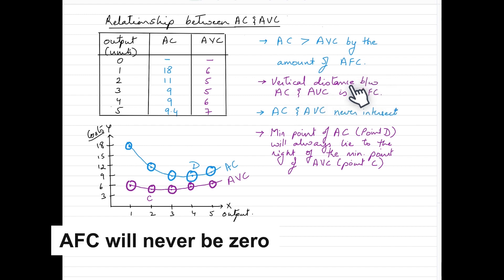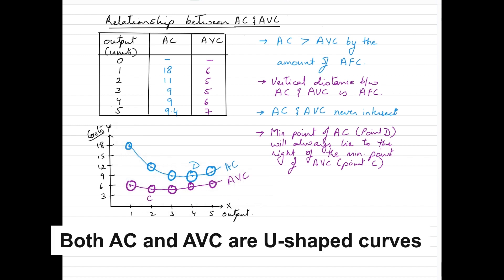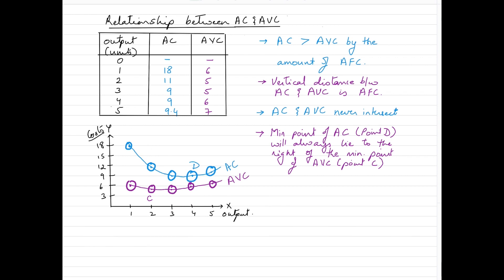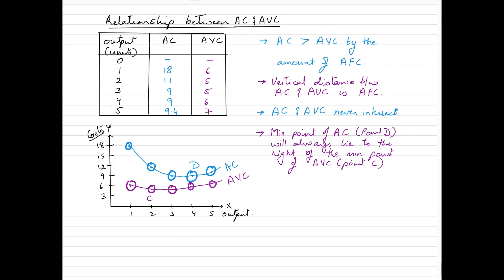If we remember from our total cost video, total fixed costs are always present even at zero level of output. We also need to remember that both AC and AVC curves are U-shaped curves, because the law of variable proportions is applicable in both scenarios. Another important thing to remember is that the minimum point of the AC curve — point D — will always lie to the right side of the minimum point of the AVC curve, which is point C.